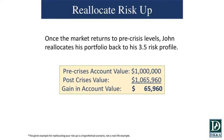Looking at the numbers again: pre-crisis he was at a 3.5 risk level. The market drops but he doesn't take as much of a drop because he's in a lower risk profile. He started with a million dollars, the account went down, he risked up, the market came back, and he now has $1,065,960 — a gain of $65,960.